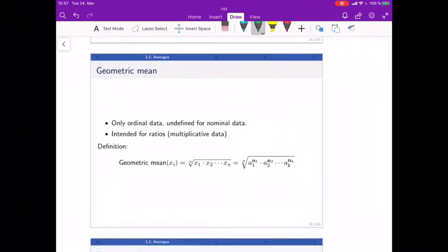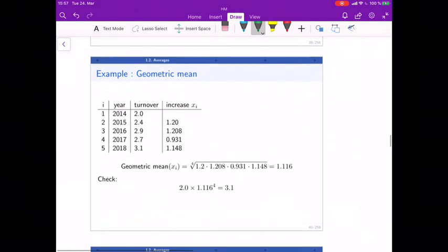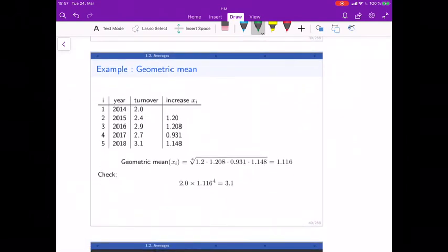There's one last one I want to talk about. It has a specific purpose and that's the geometric mean. Basically we only use it if you've got multiplicative data. And what we do is we multiply our data points and then take the nth root. And why would we do that? Let's look at an example.